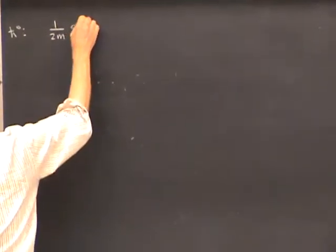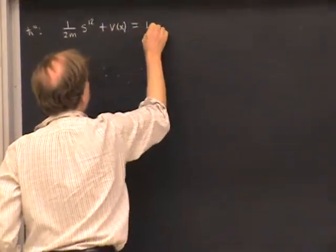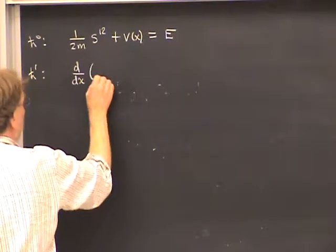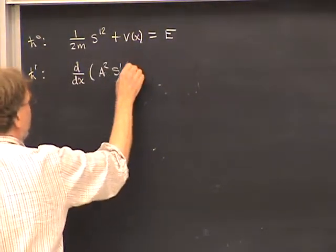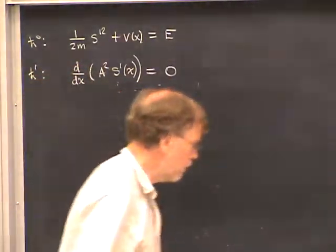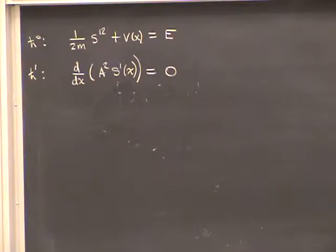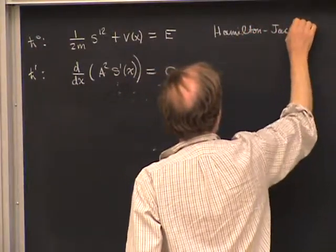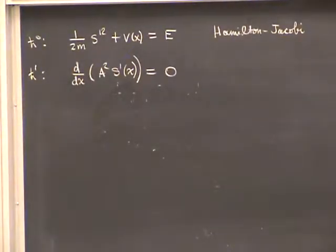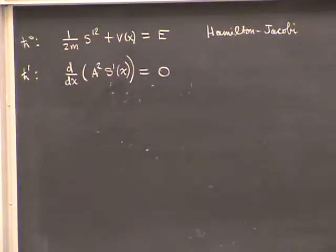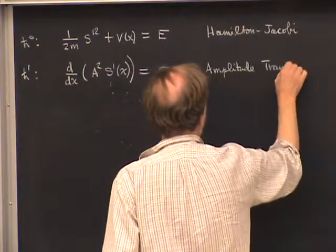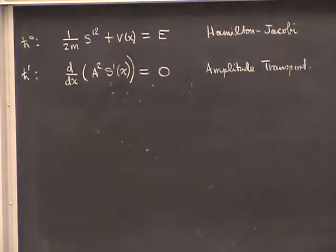To summarize, here are the two equations. The zeroth-order equation is: (1/2m)·(s′)² + V(x) = E. The first-order equation is d/dx(A²·s′) = 0. The first equation is a version of the Hamilton-Jacobi equation, which has a long history in classical mechanics going back to the 1830s and 1840s. The second equation is sometimes called an amplitude transport equation.